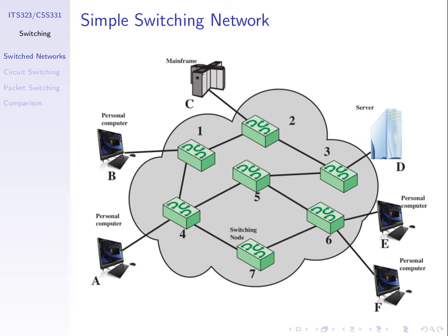If you want to send from B to D, what path would you take? B to switch 1, then switch 2, then switch 3, then D — the shortest path in terms of number of links. There are other paths: B, 1, 4, 5, 3, D, or going around through 7 and 6. The path 1, 2, 3 is the shortest. That may be a common technique for choosing which path to use.